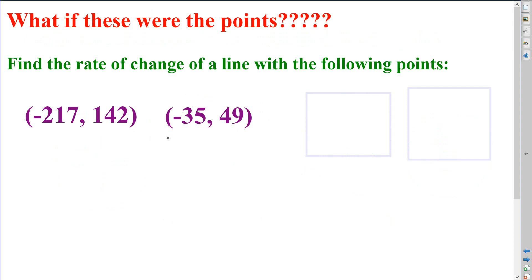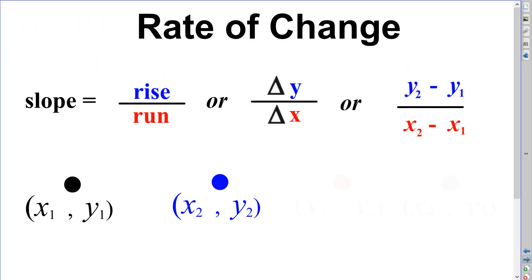Now, if I gave you these two points here, it would take a long time to create a graph and actually count the units between each point. So when you have larger values or decimal rational values, we use this other formula to help us calculate the points quicker. We use the change in the y values over the change in the x values. So we take the y value from the second point and subtract it by the y value from the first point.